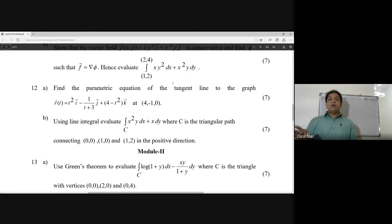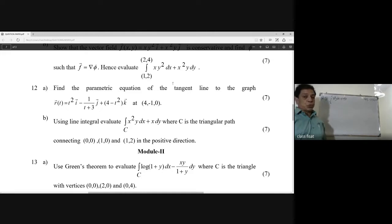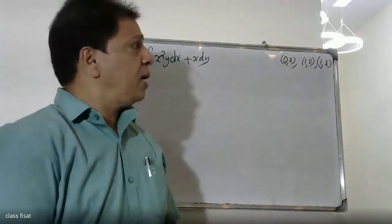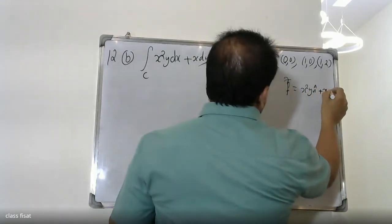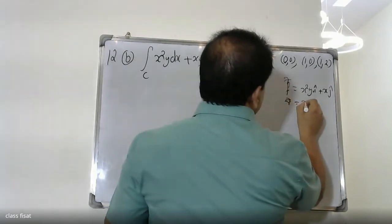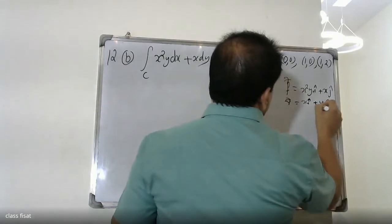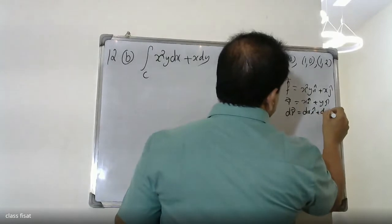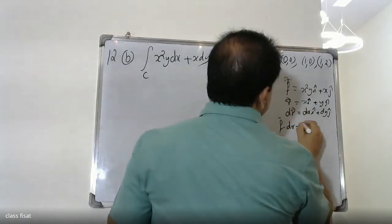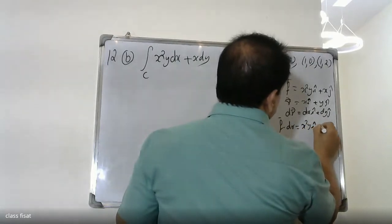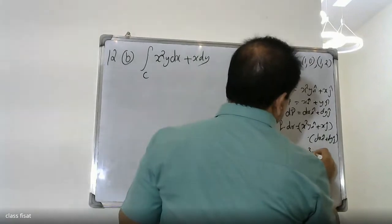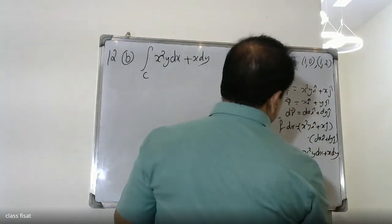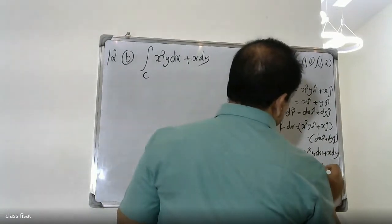Line integral over c of x squared y dx plus x dy, with points (0,0), (1,0), and (1,2). We define vector F as x squared y i plus x j, vector r as x i plus y j, and dr as dx i plus dy j. Then the integral becomes x squared y i plus x j dotted with dx i plus dy j, which gives x squared y dx plus x dy.